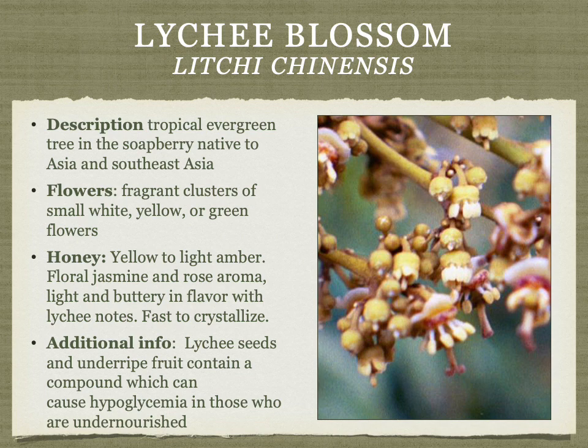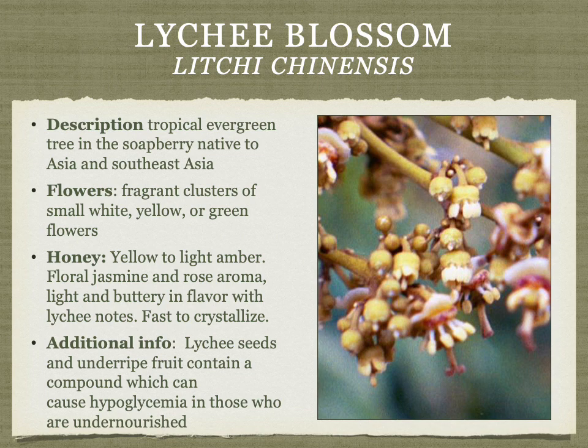Lychee blossom honey comes from a tropical evergreen from Asia. The honey is yellow to light amber — floral, with jasmine and rose-like notes, light and buttery, with tropical fruit and lychee notes. A side note: lychee seeds and underripe fruit contain a compound that can cause low blood sugar in undernourished individuals, especially children who eat the unripe fruit on an empty stomach — a reported problem in India and other countries with malnutrition.